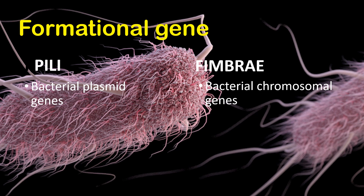Now for formational genes: bacterial plasmid genes, or extra-chromosomal genes, regulate the formation of pili, whereas the bacterial chromosomal genes regulate the production of fimbriae.